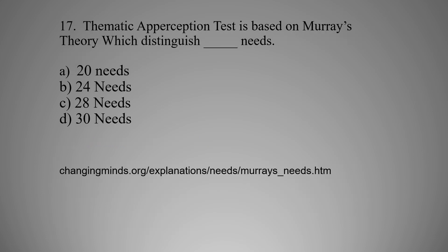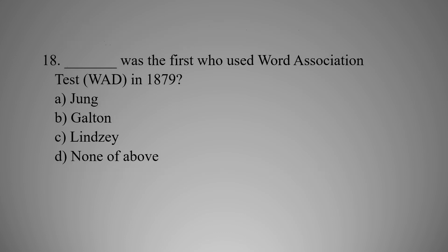MCQ number seventeen: The Thematic Apperception Test is based on Murray's theory, which distinguished how many needs? Option A: 20 needs, Option B: 24 needs, Option C: 28 needs, Option D: 30 needs. The right option is C — 28 needs.